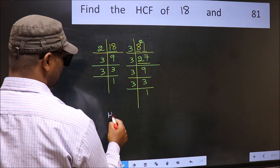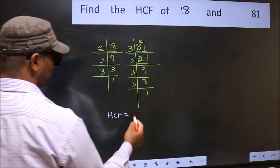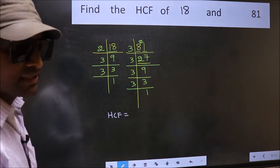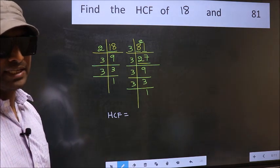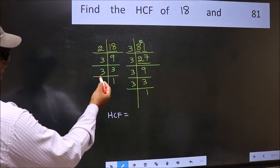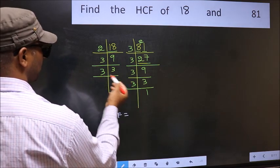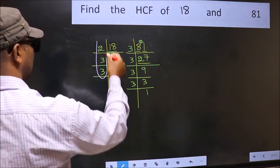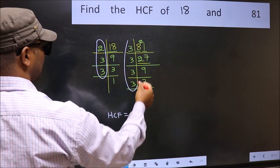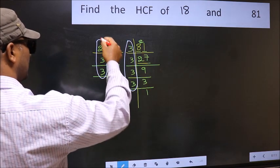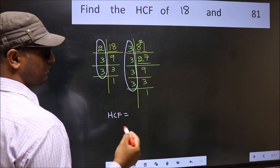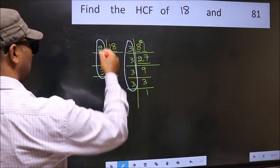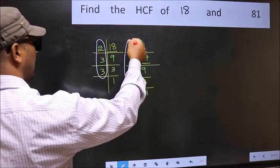Therefore, our HCF is the product of the numbers which should be present in these two places. That is here and also here. Here and here. So now let us find the numbers which should be present here and here.